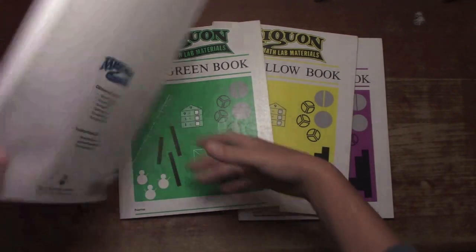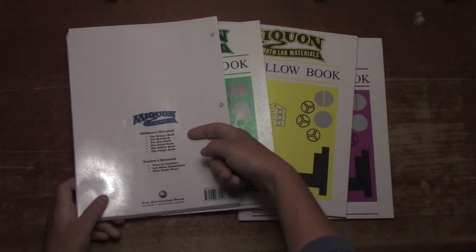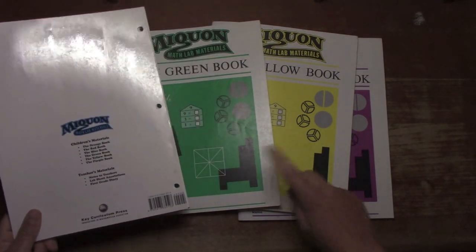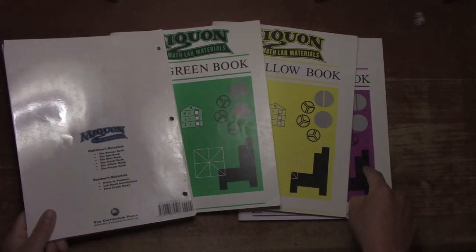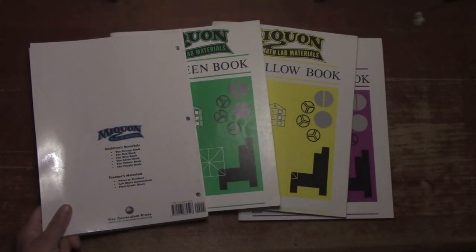If we look in the back of the book, you'll see there are children's materials. You start with the orange book, then red, then blue, which is this one, green, yellow, and purple. They're designed to be used over three years, two books a year, starting in first grade.